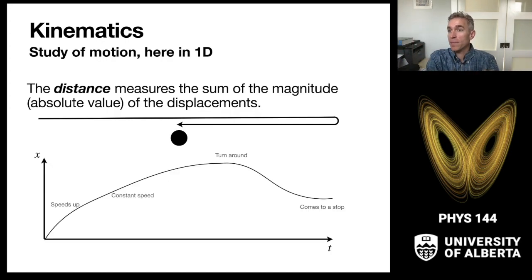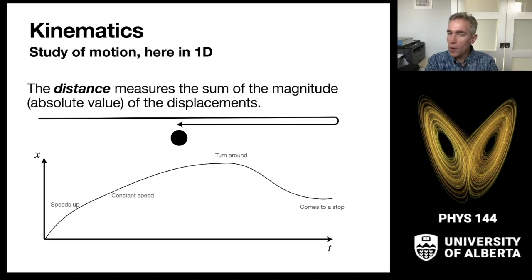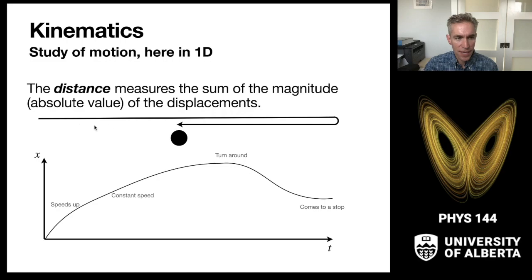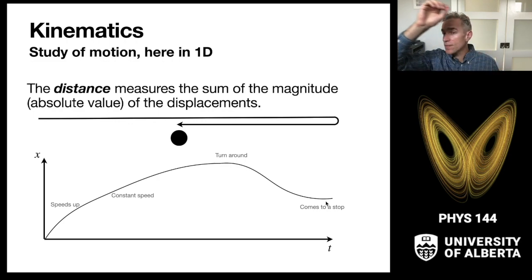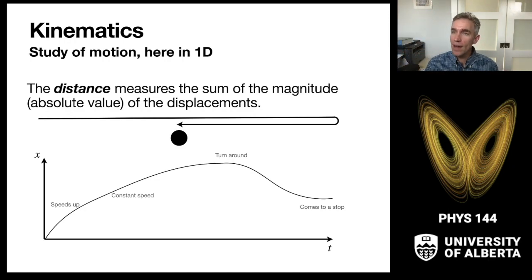We often describe these motions using x versus t graphs, where x represents position and t is time moving forward. For a particle that starts at x=0, speeds up, sails to the right at constant speed, comes to a stop, turns around, comes back to the middle, and stops again — we get a nice x vs. t graph representing that motion.